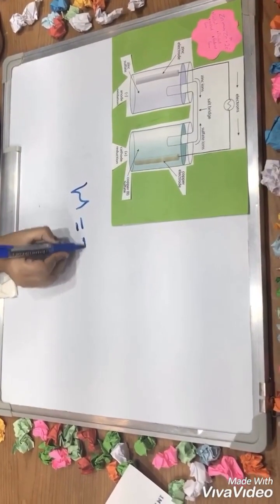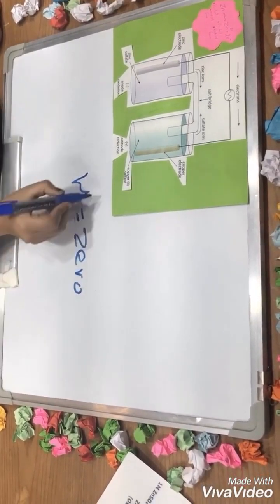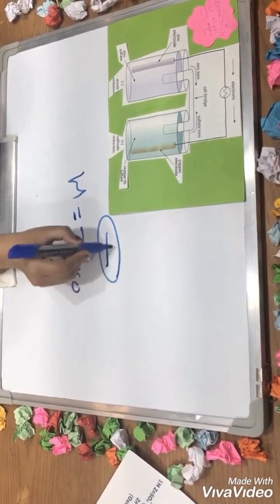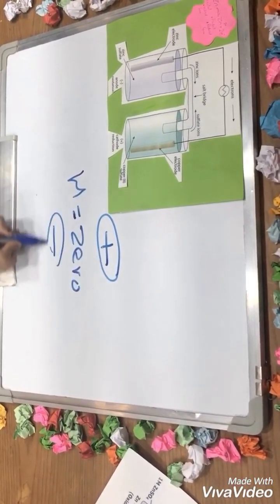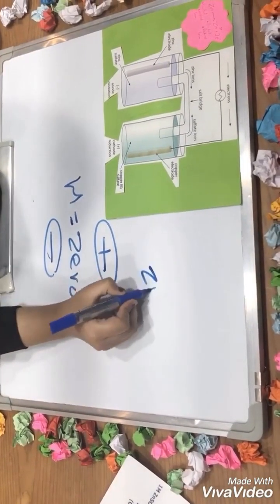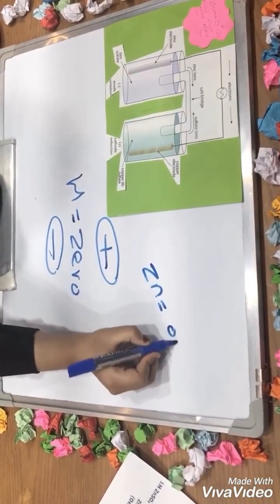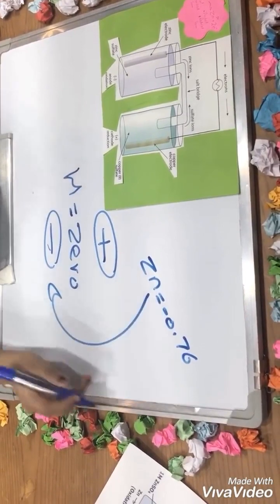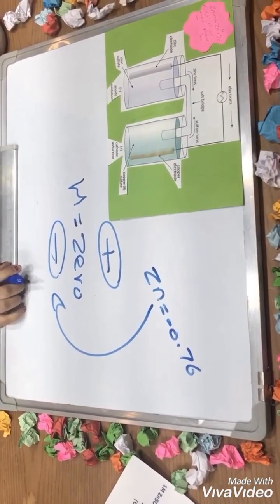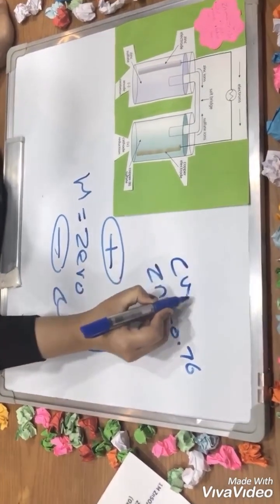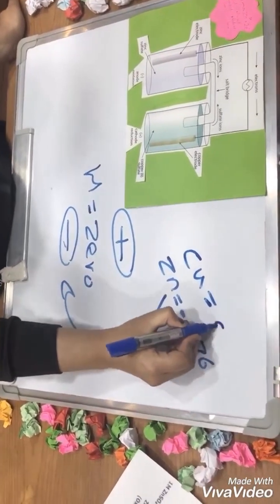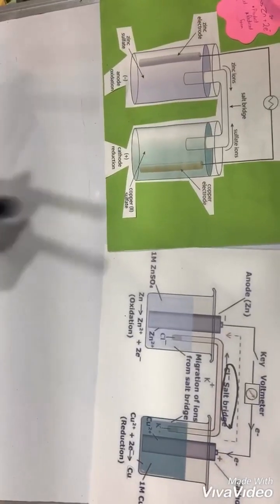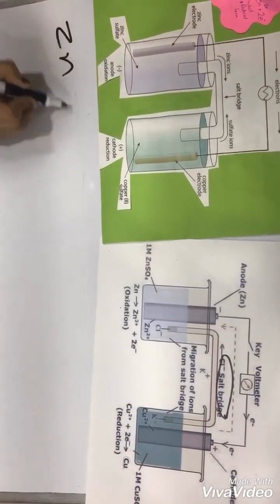In the electrochemical series, zinc is negative zero point seven six, so it's below hydrogen in the series. Copper is equal to zero point thirty four, so it's above hydrogen. We will explain the reaction that will occur between zinc and copper.